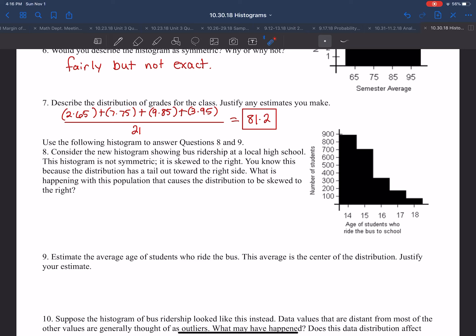What is happening with the population that causes the distribution to be skewed right? We're looking at students who ride the bus. At age 14, we have almost 900 students. But at age 18, we only have about 100. So just think, in real life, what happens as you get older? You get your license, and as you get your license, you start driving more. So as the students get older, they get their license and drive themselves to school.